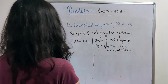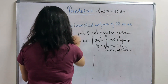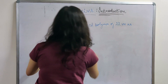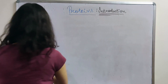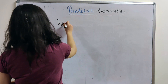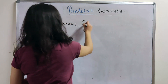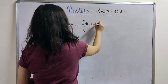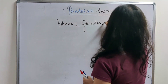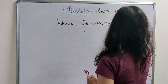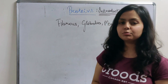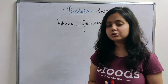The other classification of proteins is based on their structure. There are three types: fibrous, globular, and membrane proteins.